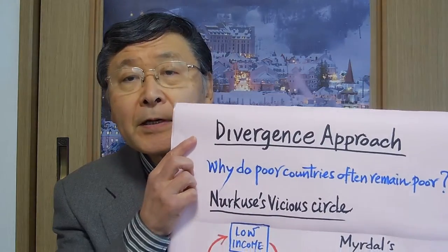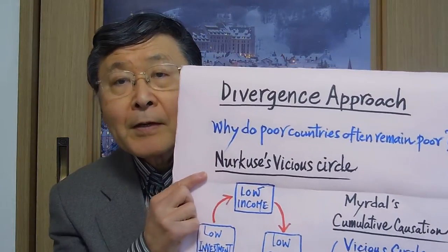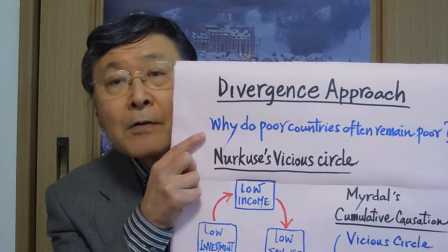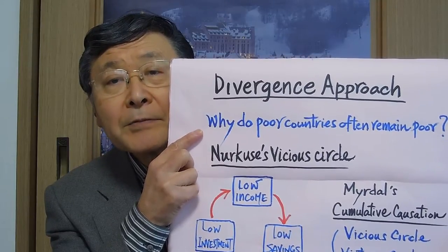So far, we have been studying the so-called convergence approach, where developing economies are assumed to grow into a kind of developed stage over time. However, in reality, we observe a lot of poor countries remaining poor or becoming even poorer, so we need to take up the divergence approach. The question is why poor countries often remain poor or become even poorer.